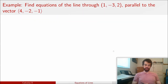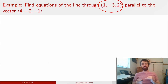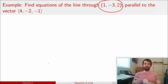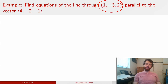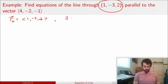Let's look at a specific example. I have a point (1, −3, 2) — note I use round brackets because it's a point — and the line is parallel to the vector ⟨4, −2, −1⟩ — triangular brackets because it's a vector. The direction vector tells me which way I'm going, and the point tells me the initial vector. So my r0 equals ⟨1, −3, 2⟩, going from the origin out to the point, and once on the line I go in the direction v equals ⟨4, −2, −1⟩.